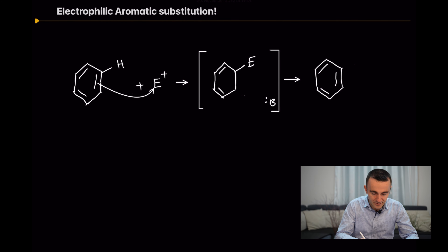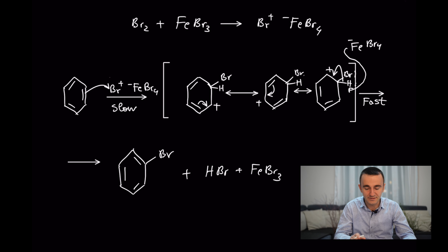The carbocation moves here. Next, this double bond can move and the carbocation shifts again. Then the base removes the hydrogen, and this bonding pair serves as the new double bond. The final product is the halogenation of the aromatic ring, plus the remaining byproduct.